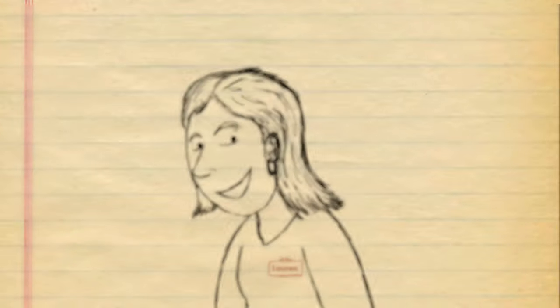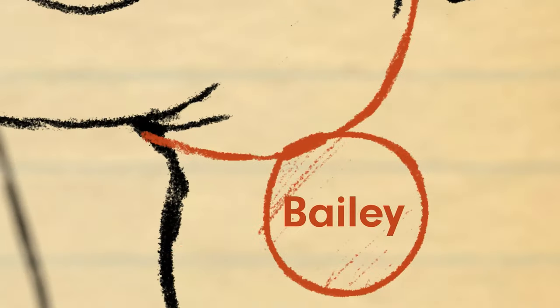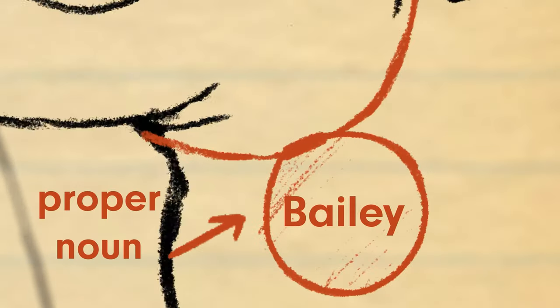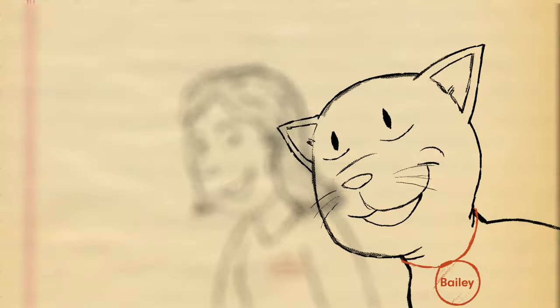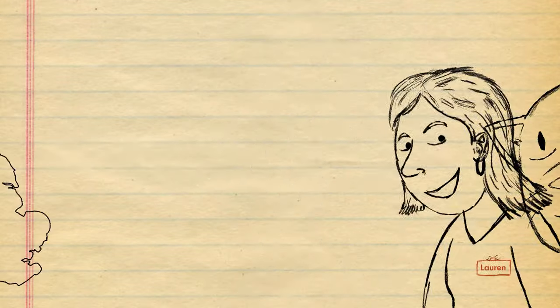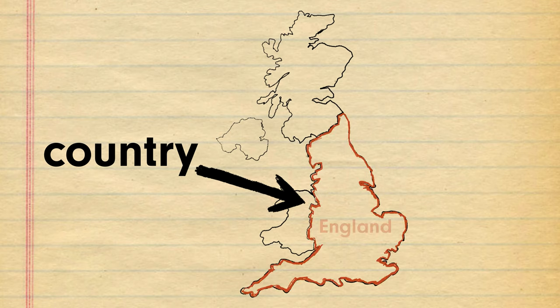This is the same for animals. Cat is a common noun, while Bailey is a proper noun as this is his name. This also works for places. The word country is a common noun and so does not need to be capitalised, whereas England is the name of the country and so needs the capital E.